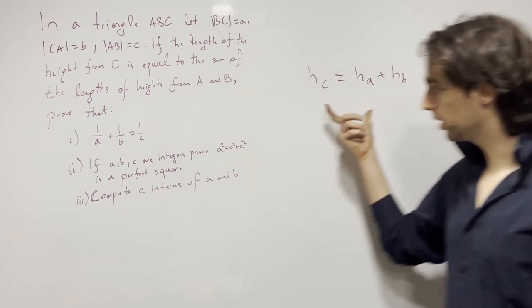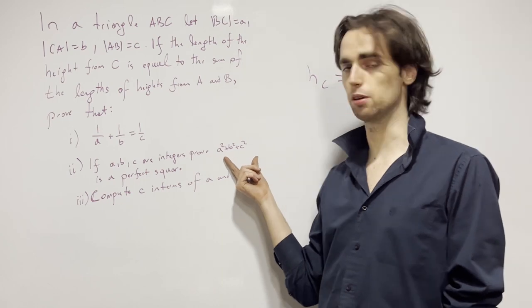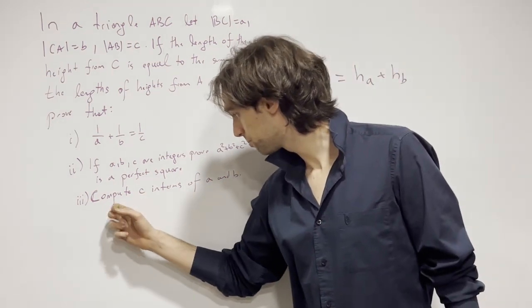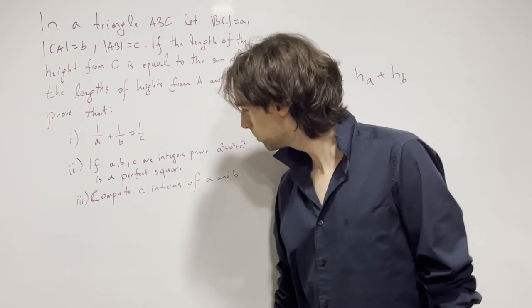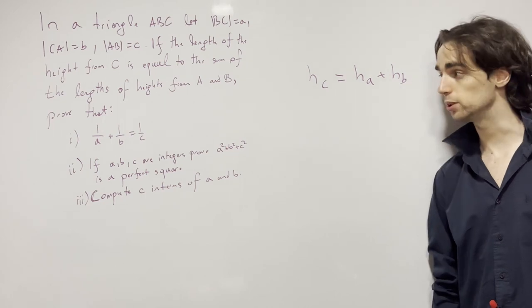So we need to go from here and prove this, and then if A, B and C are integers we need to prove that this is a perfect square. Again interesting stuff and finally we need to compute C in terms of A and B. Okay so now let's go ahead and do this.